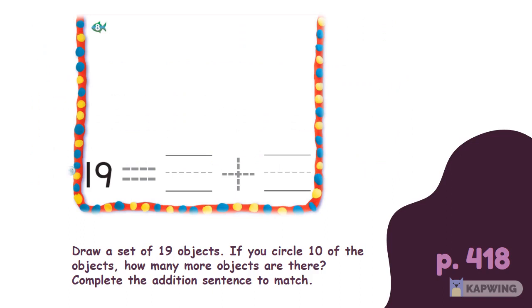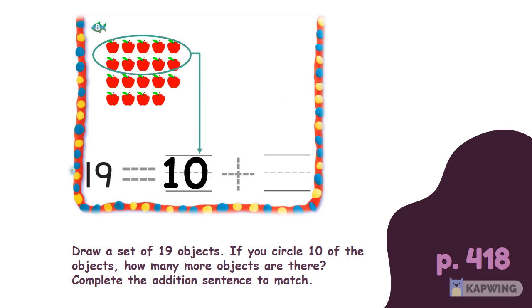In this exercise, we will draw a set of 19 objects. And I choose apples. If I would circle 10 of the apples, how many more apples are there? 9. 10 plus 9 equals 19.